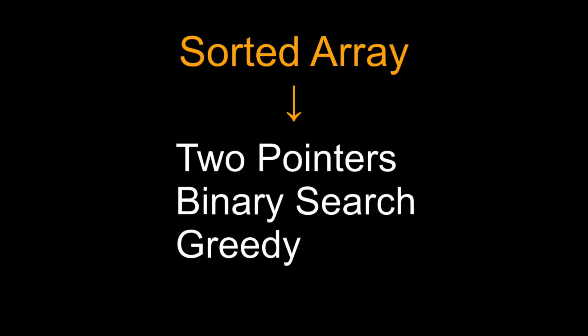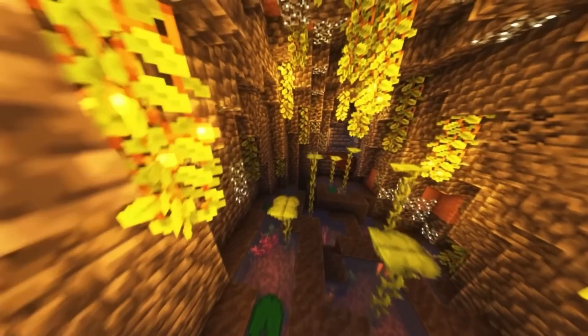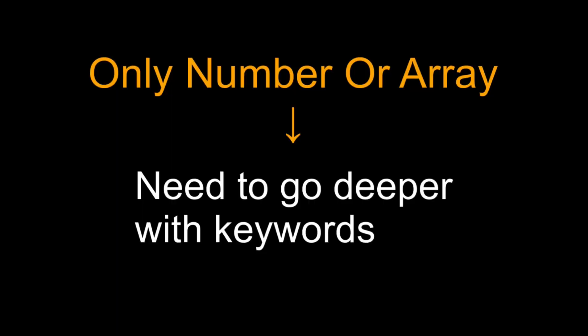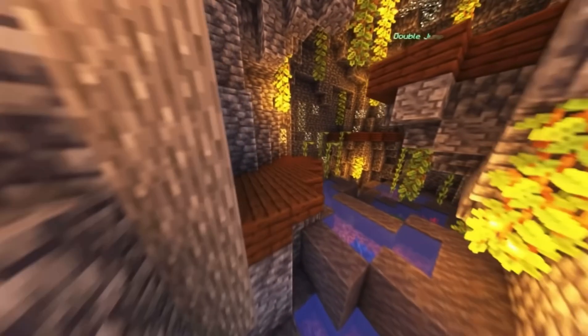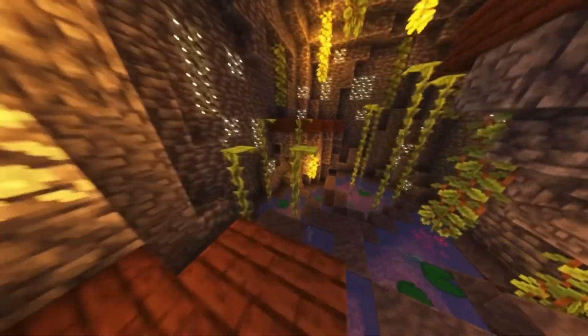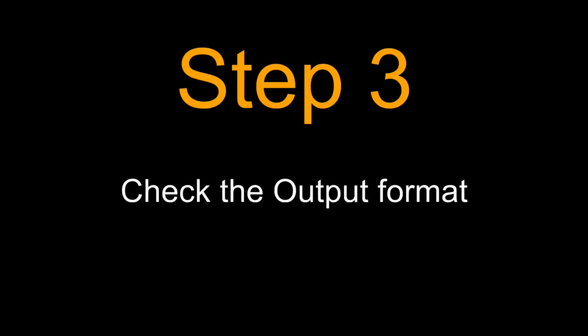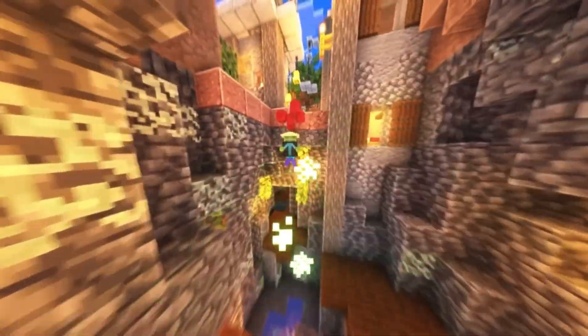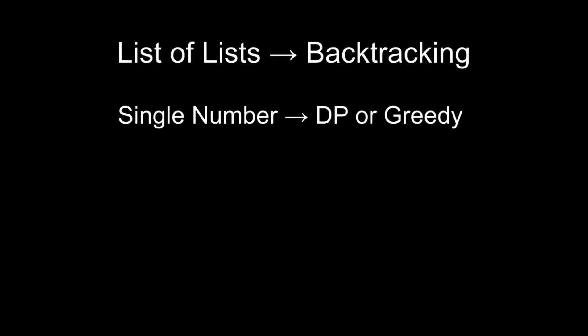If the input is a sorted array, that's your signal for two pointers, binary search, or maybe a greedy approach, because sorted data can be exploited to save time. If it's just a plain array or a single number, you don't stop there — you look deeper at the actual question text. Then comes the output format, which is another big clue. If the output is a list of lists — like all subsets, all paths, or all combinations — that almost always means backtracking.